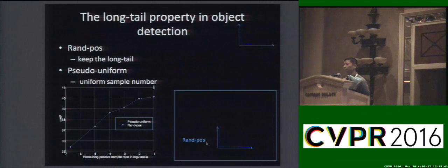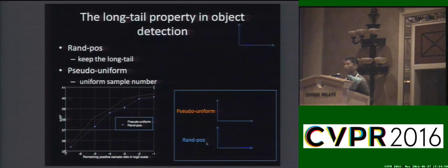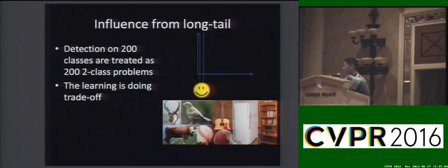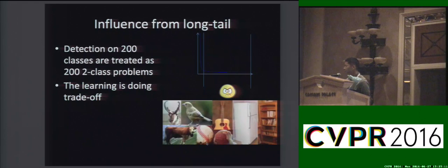We also find that learning better features for datasets with long tail distribution performs worse compared to datasets with uniform distribution in sample numbers. Why does this happen? When learning deep features with a long tail distribution, the model will focus more on object classes with more samples, and it fails to learn well for object classes with fewer samples.